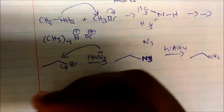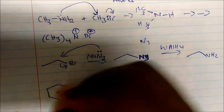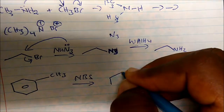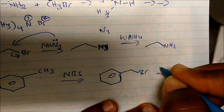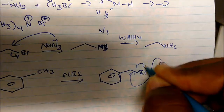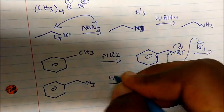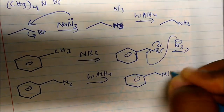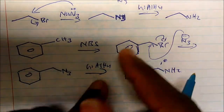We can also make an amine a different way. If we have toluene and add NBS, we get benzylic bromination — the bromine ends up at the benzylic position. We then add NH3 or sodium azide; it attacks and displaces the bromine to give the N3 product. We then reduce with lithium aluminum hydride and get benzylamine. Notice we are forming primary amines here.